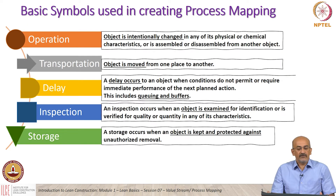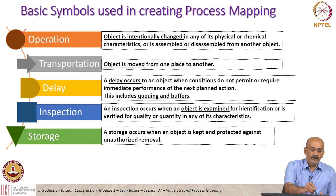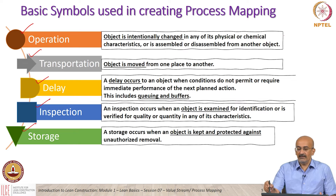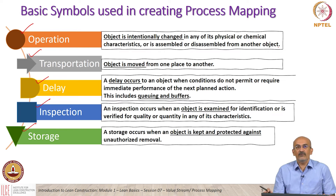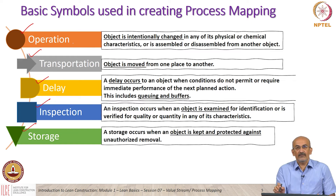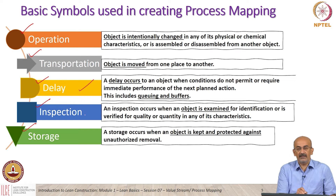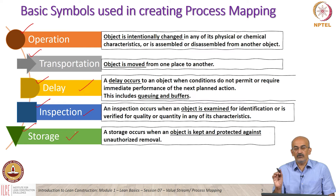These are the basic symbols of a process chart. There is a symbol for operation, a symbol for transport, a symbol for delay, inspection, and storage. The definitions are given and are very intuitive. An operation means that something is being done to change it. Transportation is movement from one place to another. A delay occurs when there is queuing, buffering, or some delay between processes. Inspection is done after an operation to make sure quality or specifications are met. Storage is when the object is stored for the next phase.